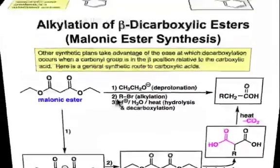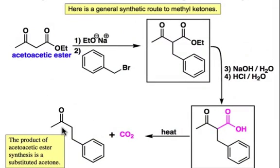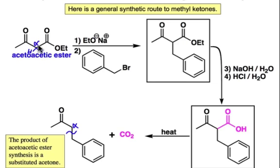A second example of this chemistry involves the synthesis of methyl ketones, where we have a variable portion attached to the α-carbon of that methyl ketone. This is known as the acetoacetic ester synthesis, and it takes advantage of a common building block in which we first deprotonate at the α-position to make a good nucleophile. SN2 displacement on an alkyl halide makes the new carbon-carbon bond.